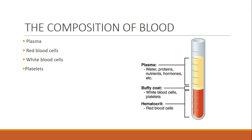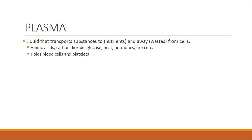The first thing we're going to be looking at is plasma. Plasma is the liquid that transports substances to and away from the cells. This can be things like amino acids, CO2, glucose, and all these other things. Another important function is that it holds blood cells — both red blood cells and white blood cells — and also platelets.